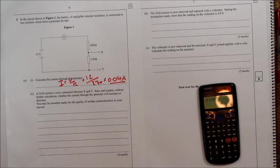A 20 ohm resistor is now connected across X and Y. State and explain, without further calculation, whether the current through the ammeter will increase or decrease.